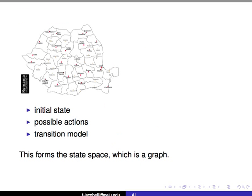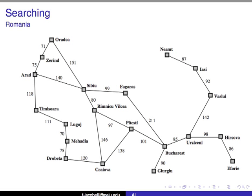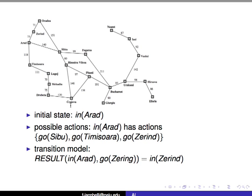Let's see the state space as a graph. This is the same map with some of the routes and the distance between one point and another in kilometers. For example, from Oradea to Sibiu there's 151 kilometers. What's interesting is that for most viewers not from Romania, they may not know this map — just like a computer that has never been to Romania doesn't know anything about the geography except what you give it. Those of us who have never been to Romania are like a computer — this is completely unknown to us; we just have distances and locations.